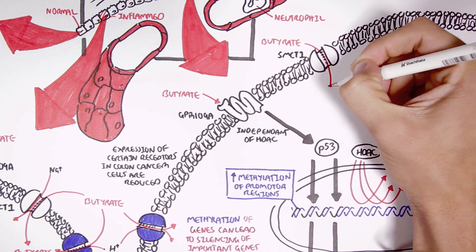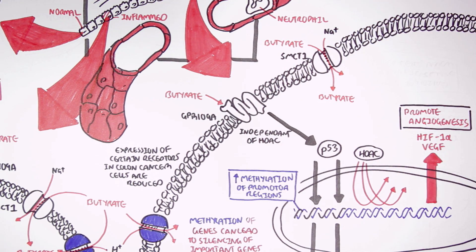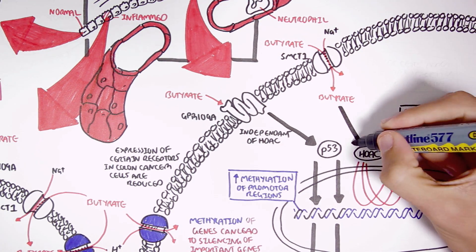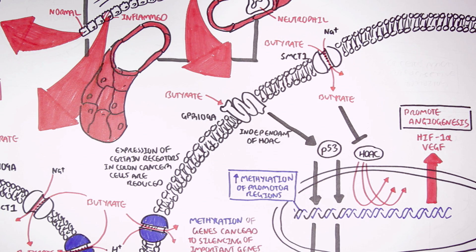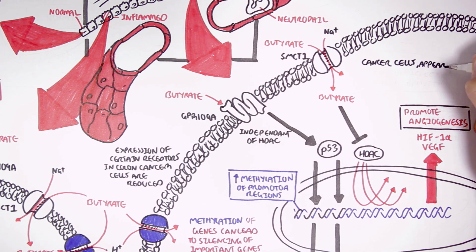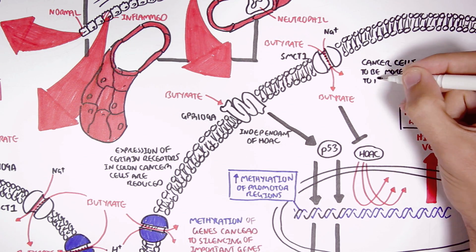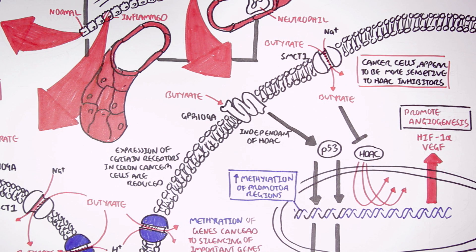Now, butyrate within the cell can inhibit histone deacetylase, allowing access of certain transcription factors. Interestingly, cancer cells appear to be a lot more sensitive to histone deacetylase inhibitors, such as butyrate.